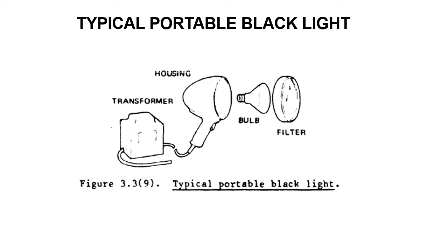Here's a typical portable blacklight — nothing too fancy. It's just a bulb, a filter, a housing, a transformer, and it's a blacklight. It's used for fluorescent dyes. You get in a dark place, shine the blacklight on the surface, and it'll really bring out that fluorescent dye — like turning off a light and seeing a fluorescent poster, but this will show you cracks.